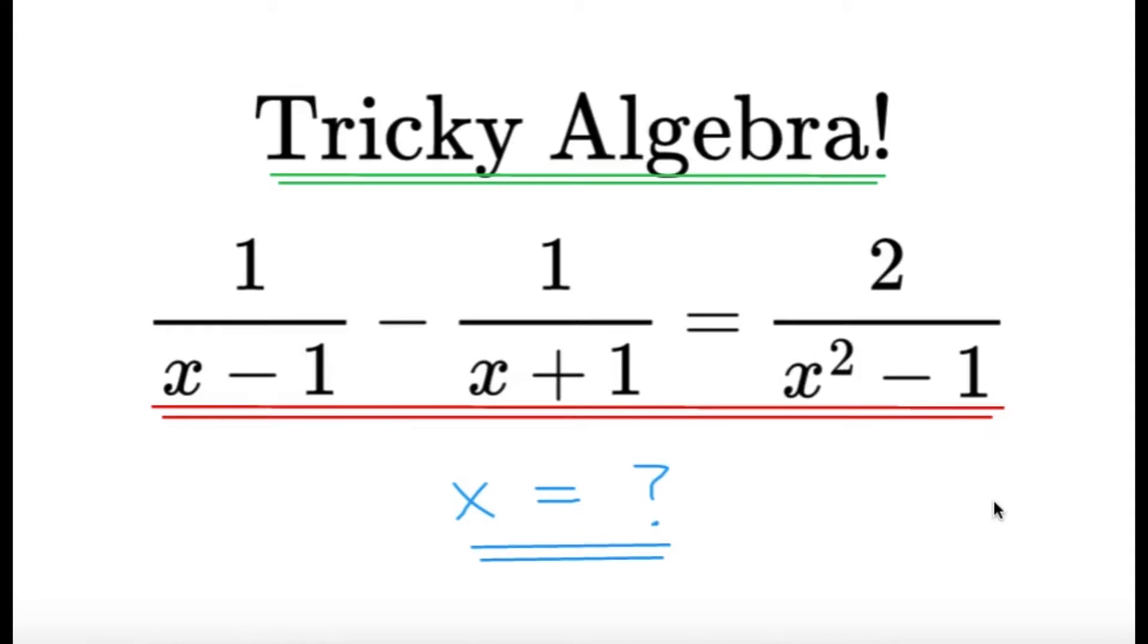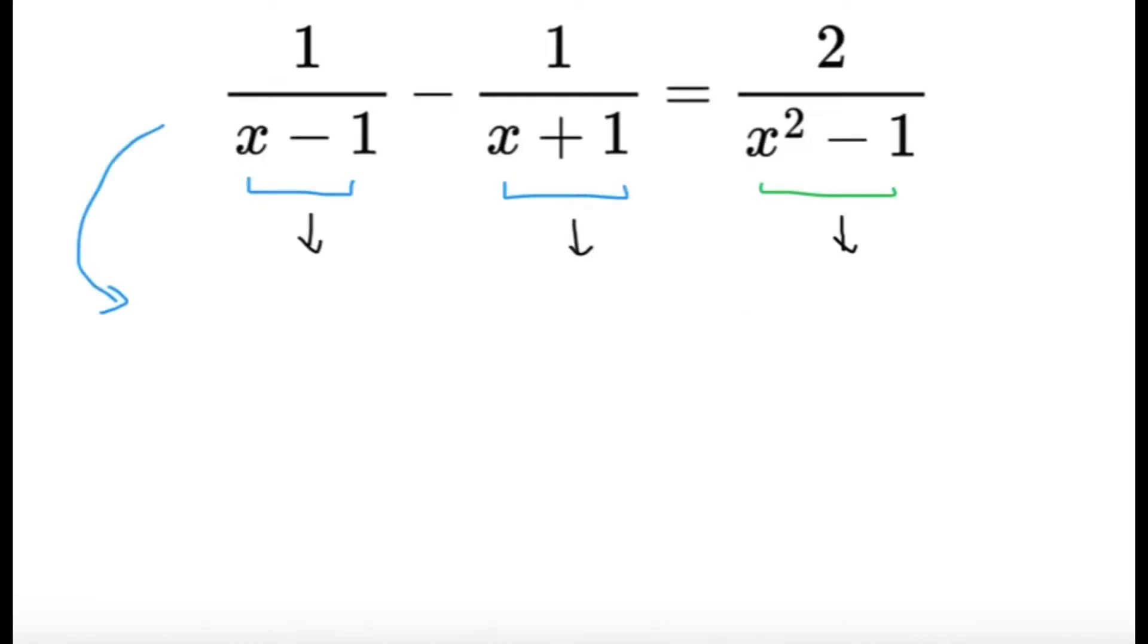Now, I labeled this item as a tricky algebra item because there is a part of the solution that we need to do some analysis on. Let's try to see what part it is and what makes this item a little bit tricky.